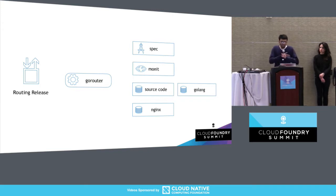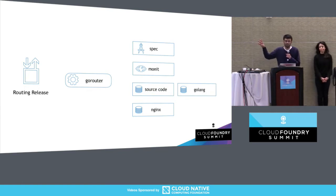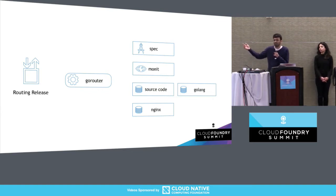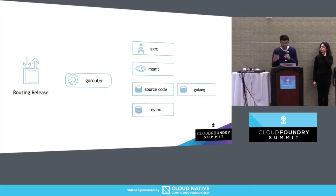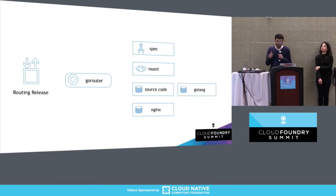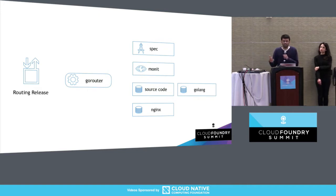The spec file is a declaration of all the properties that can be consumed inside the job. If you want, as a release author, to receive any property from the outside world, you have to declare it in the specification file. The packages are where the job packages all of its required dependencies — this can be source code or all the dependencies that the source code uses. For example, the GoRouter has its source code in Go, so it has a dependency on Golang, and also a dependency on the Nginx server.